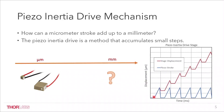Motions in micrometer scale may be enough for some applications such as nanopositioners, automotive systems, microscopes, and so on. But we will always need higher displacement for millimeter-scale applications. How can a micrometer stroke add up to a millimeter?